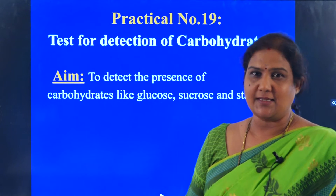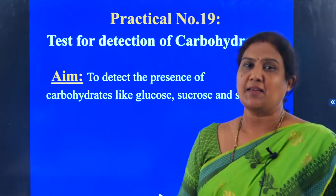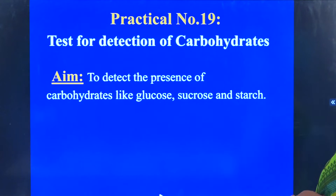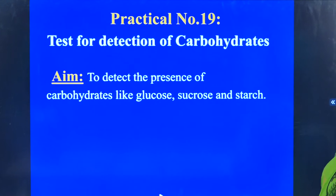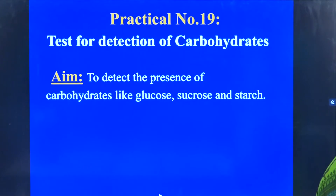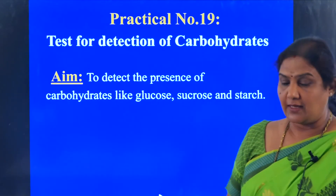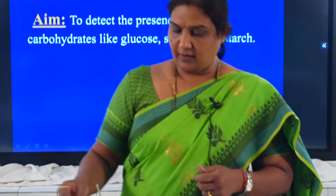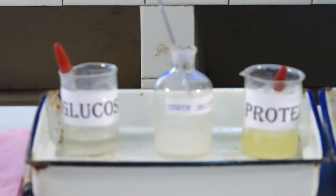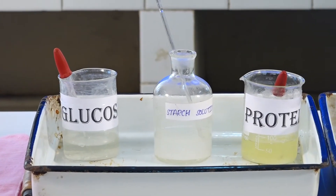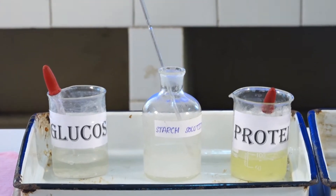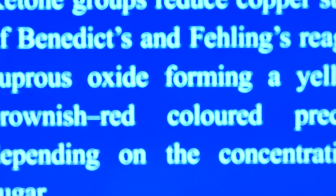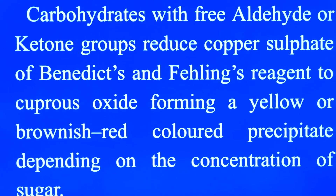Let us now learn how to detect the carbohydrates as well as the proteins in a given sample. In this particular practical we are going to test for the detection of carbohydrates. The aim is to detect the presence of carbohydrates like glucose, sucrose, and starch. We are limiting to detect the glucose in the given sample.